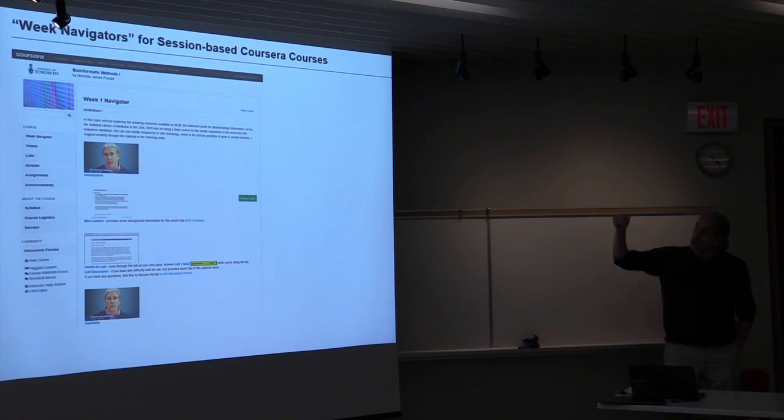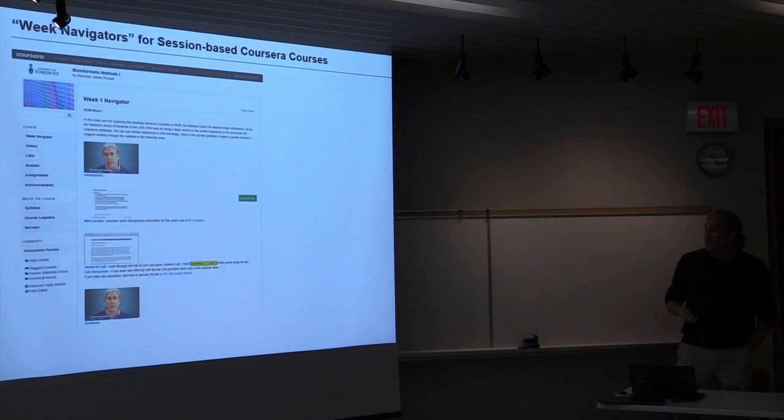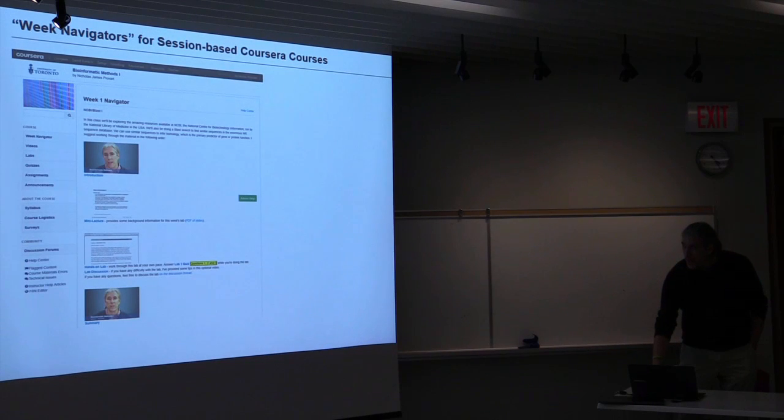Bioinformatic Methods one ran in January 2014. 20,000 students took this course. I was amazed that there are even 20,000 people who are interested in bioinformatics. Approximately 8,500 students registered for Bioinformatic Methods two, which ran in March 2014. The completion rates were around 9% for the first one and about 15% for the second one. So these were the classic session-based models. We developed a week navigator to guide students through the material. The focus of the material was an undergraduate course I teach here at U of T called Bioinformatic Methods, CSB 352.